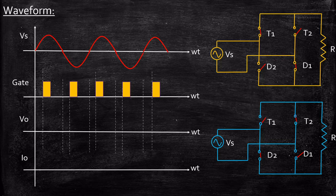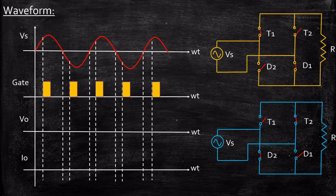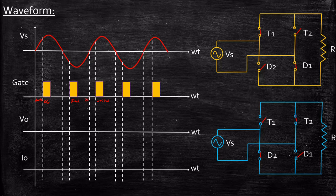Let us say we are applying a gate pulse at alpha — alpha is the firing angle. At the instant of alpha we give a firing pulse. The next pulse will be at pi plus alpha, and then at 2pi plus alpha, because we apply after one complete period. Based on that, we identify where we are going to trigger these signals.